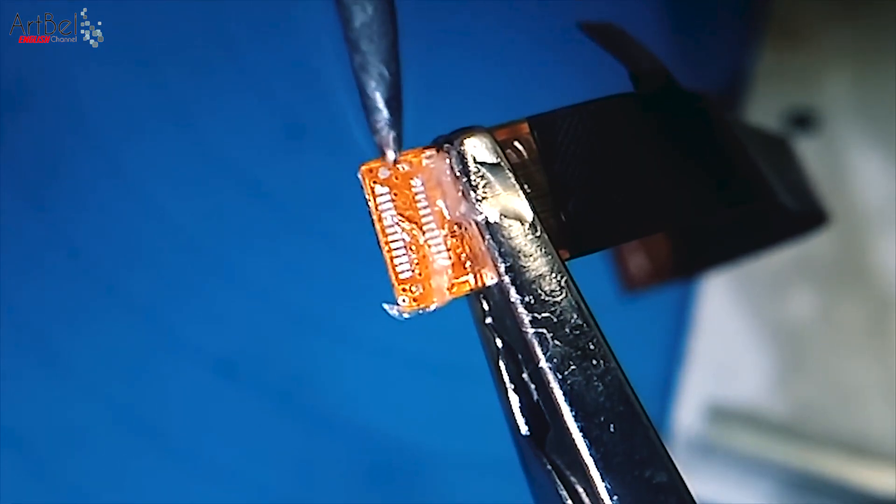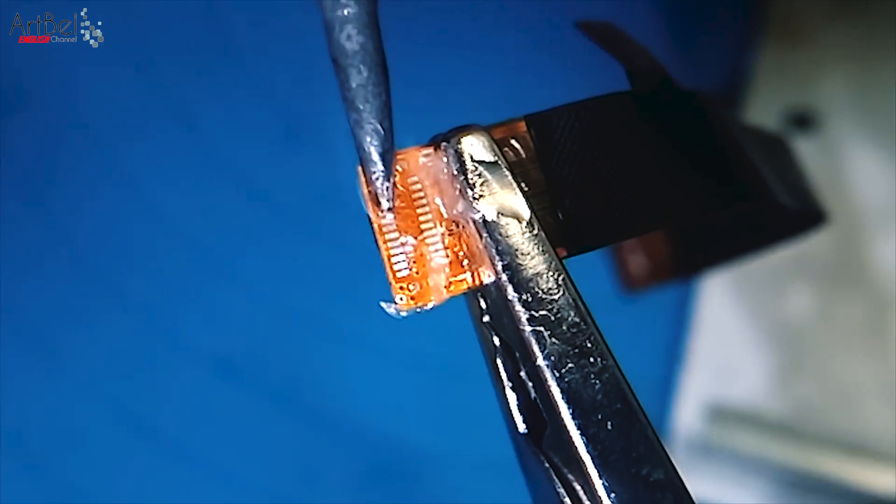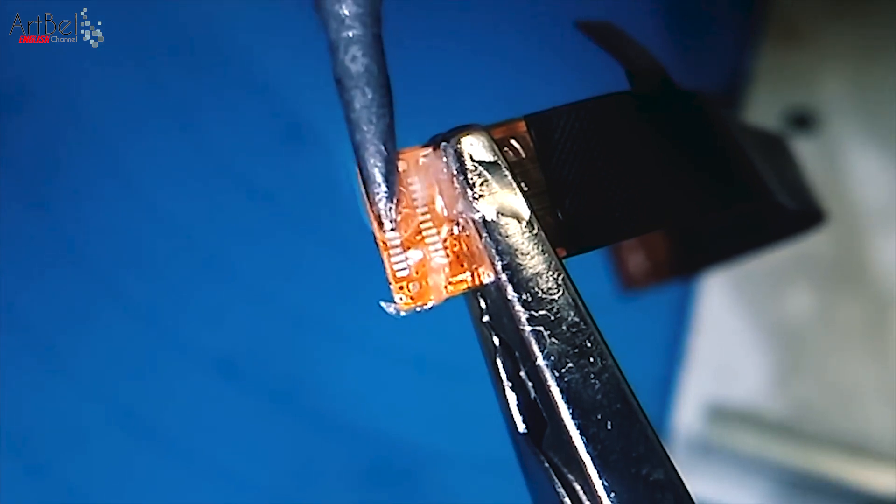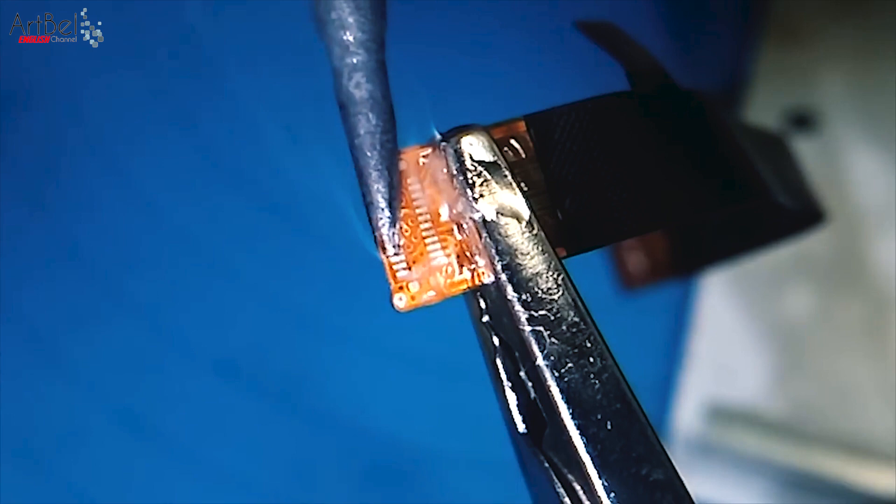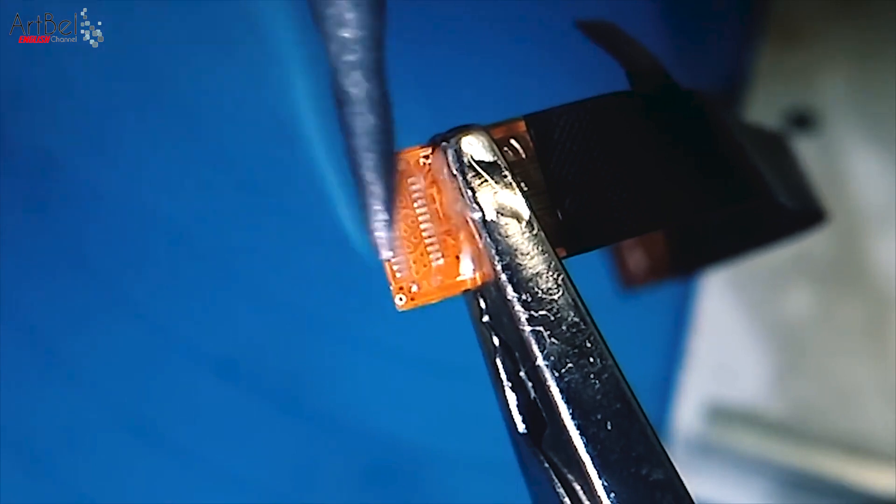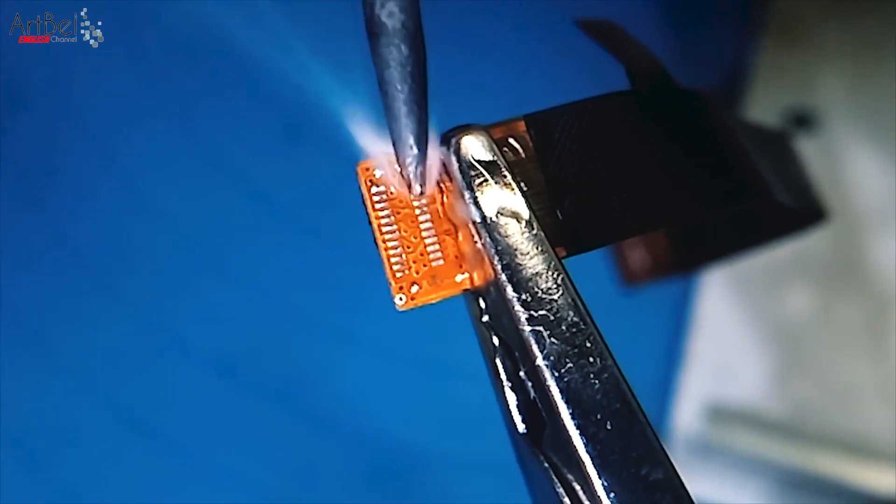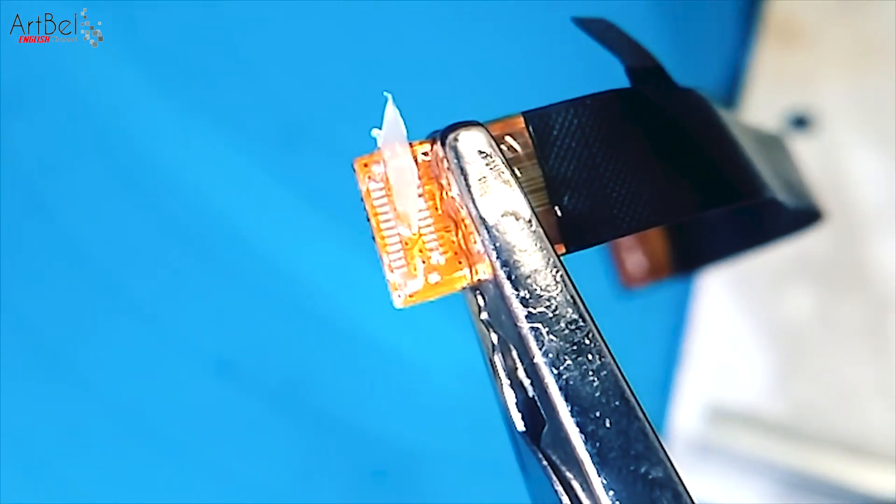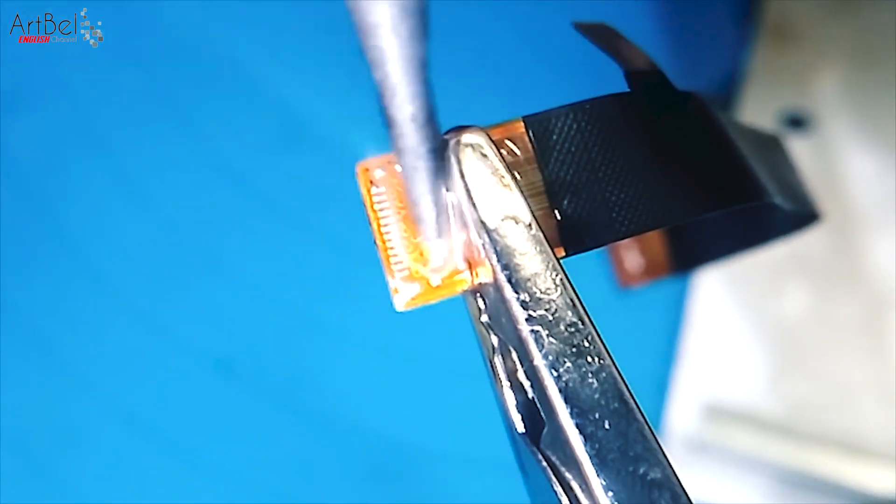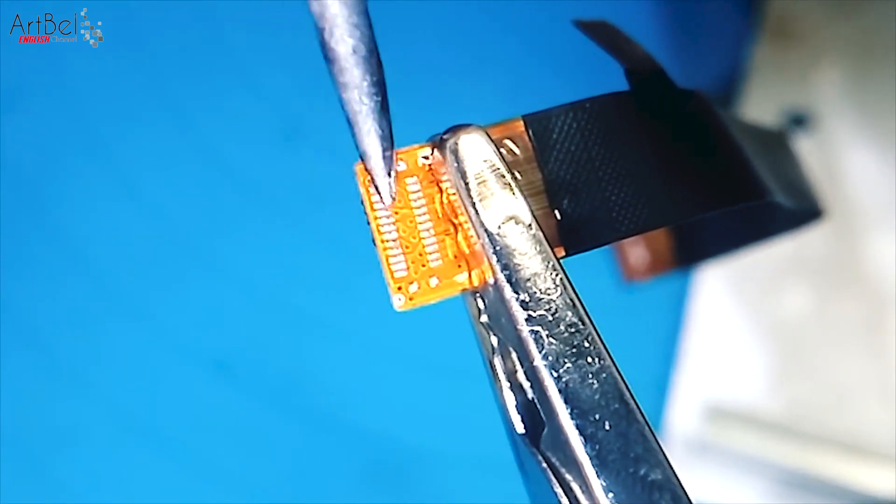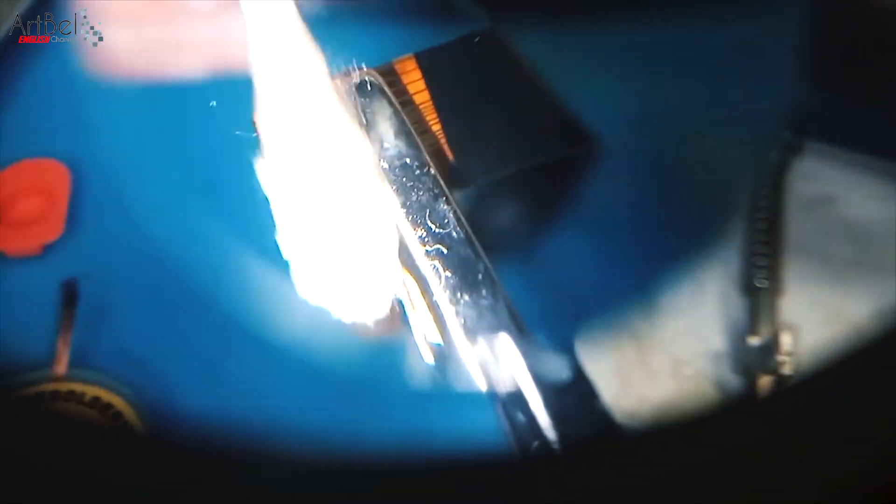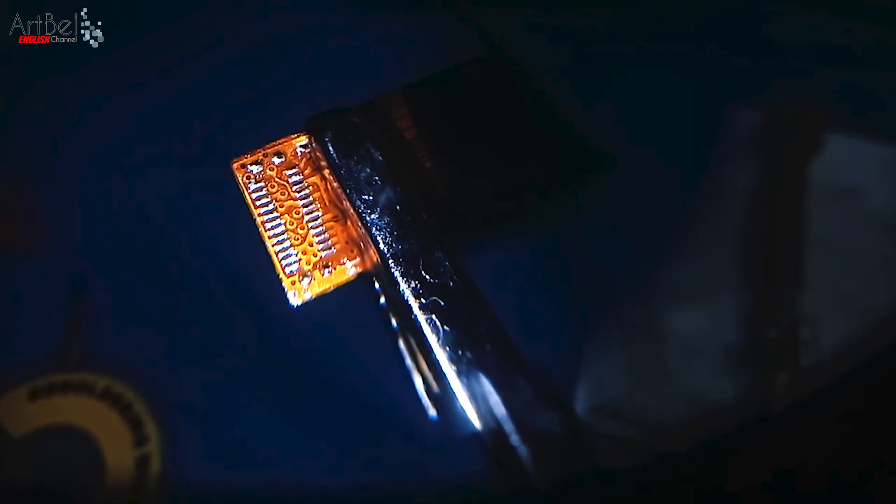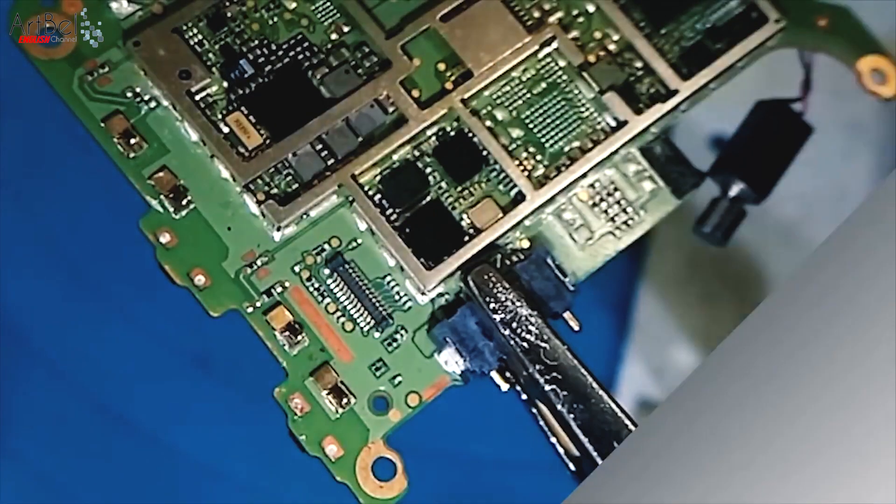Take solder on the tip of the soldering iron and transfer it to the contacts. Make such pillows. Let's add more flux. Clean the tip and collect excess solder so the pillows will be even and neat. And this is how your connector pad should look like.